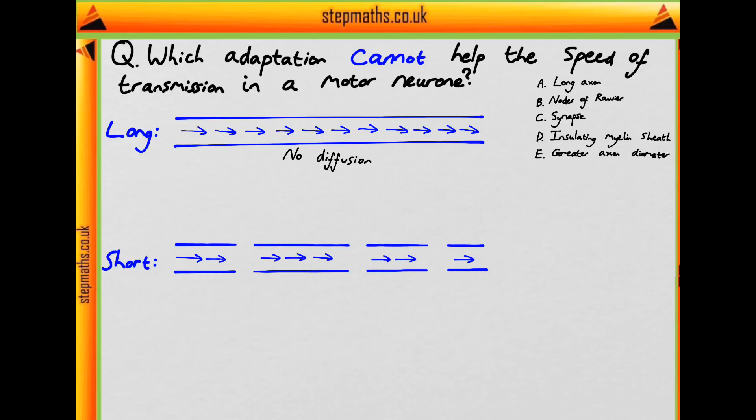If we look at a short axon with multiple stages where diffusion can occur, that is the synapse between neurons, this is much slower as this diffusion can't be sped up by these other adaptations. So yes, a long axon can help the speed of transmission in a motor neuron, so it's not the long axon.